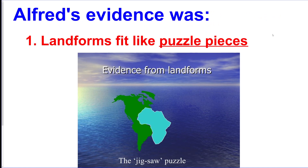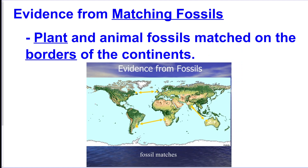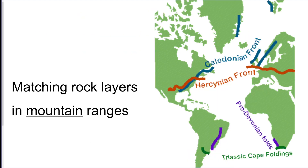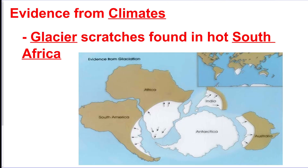Alfred Wegener was the guy who essentially discovered continental drift. The evidence: land forms fit together like puzzle pieces; plant and animal fossils matched on the borders of continents; mountain ranges ended on one continent and appeared to continue on another; and glacial scratch marks were found in hot South Africa, which is kind of weird.